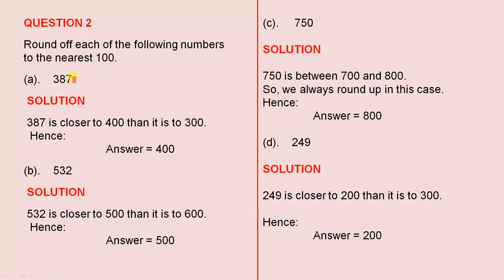If we look at 387, we can see that 387 is closer to 400 than it is to 300. If you were to put that number on a number line between 300 and 400, it will be a lot closer to 400. Hence, 387 to the nearest 100 is 400.